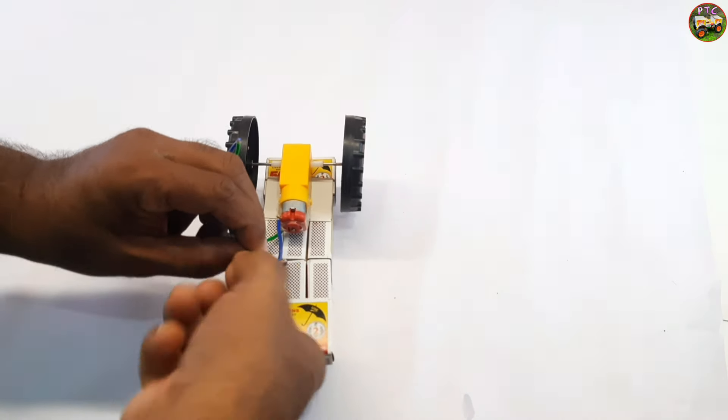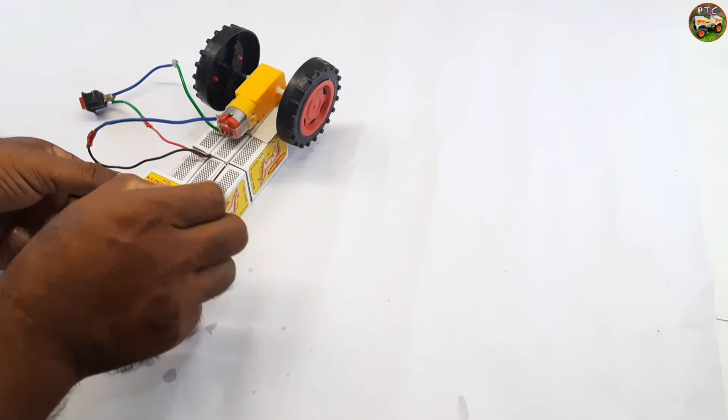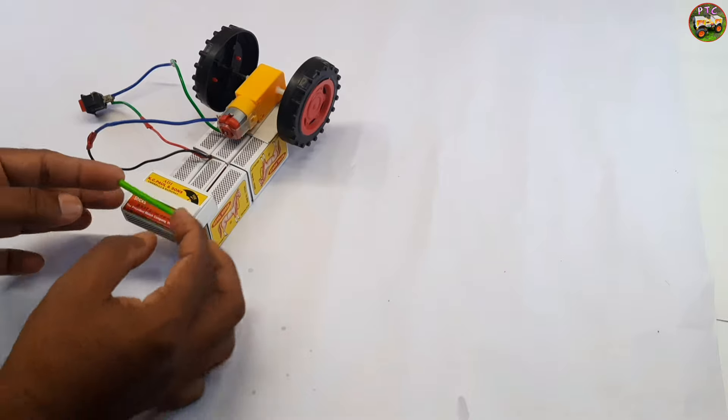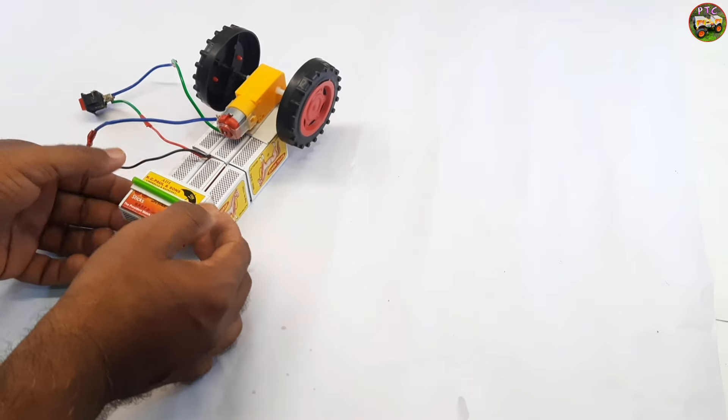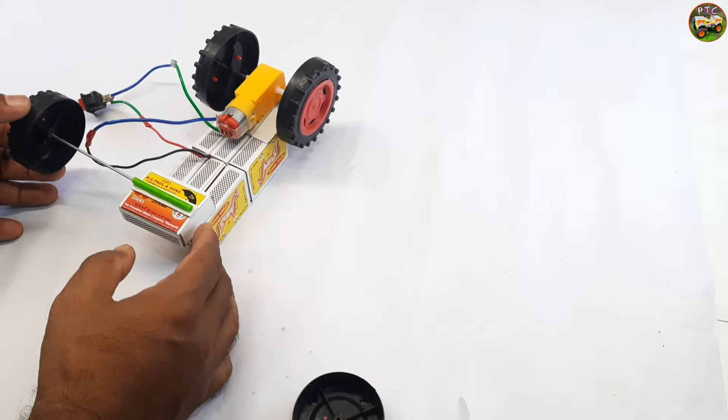Now I have connected the battery, motor, and switch. These are plastic pipes. These are toy car wheels.